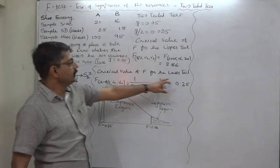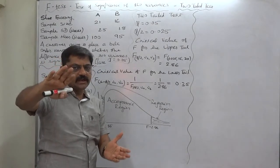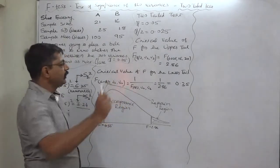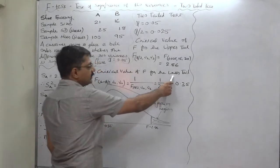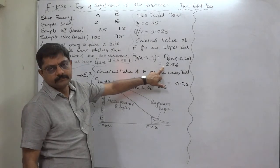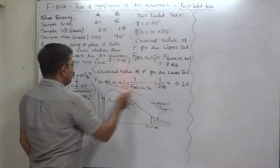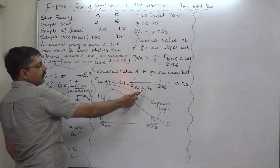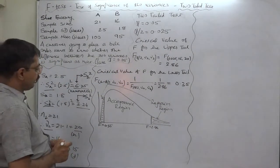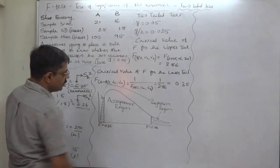Now how to find the critical value of F for the lower tail? In the case of the F-test, the critical value for the lower tail is the reciprocal of the critical value of the upper tail. So the formula is: critical F for lower tail equals 1 divided by the critical value of the upper tail, which is 1 divided by 2.86, giving 0.35.